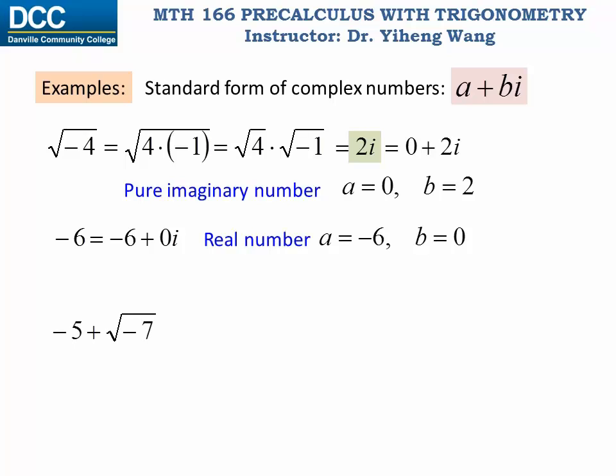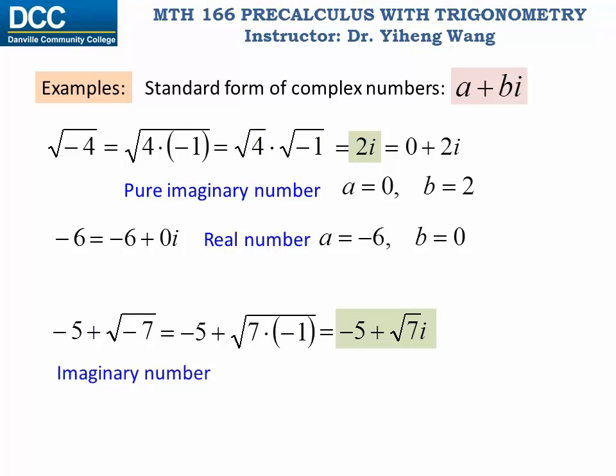Another example: negative five plus the square root of negative seven. We can do the same thing for the square root of negative seven. Therefore in standard form this is negative five plus the square root of seven times i. The real part is negative five, and the coefficient for the imaginary part is the square root of seven, so square root of seven times i is the imaginary part.